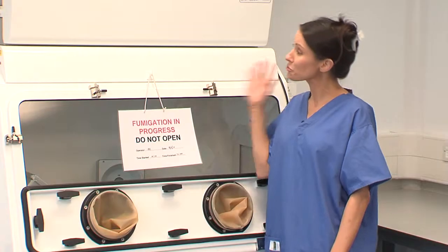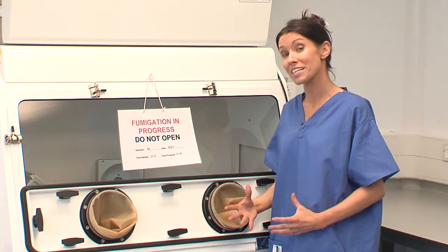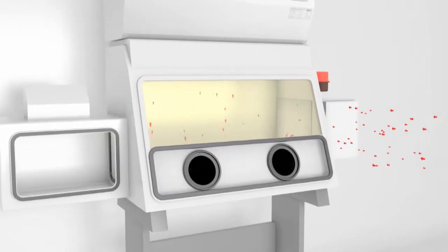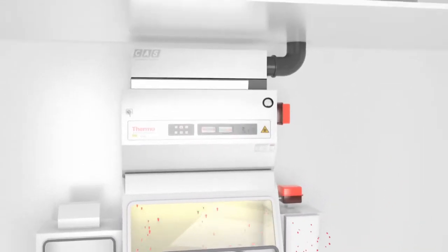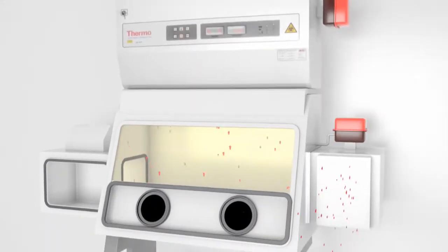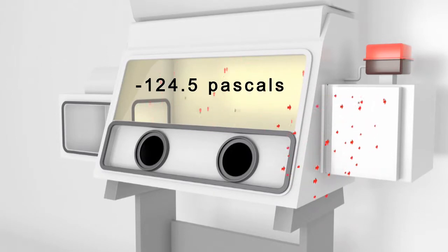The class 3 biological safety cabinet provides the highest level of protection for personnel and the environment. The cabinet itself is a completely sealed air tight unit. The air supply is HEPA filtered and the exhaust air passes through two HEPA filters. Air flow is maintained by a dedicated exhaust system outside of the cabinet, which keeps the cabinet interior under negative pressure around 124.5 pascals.